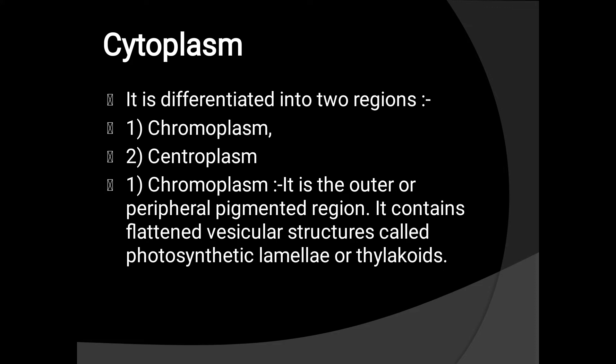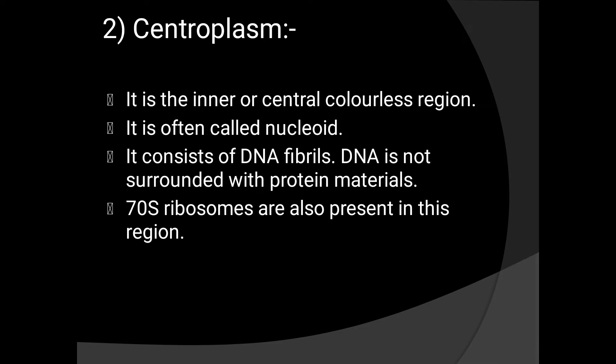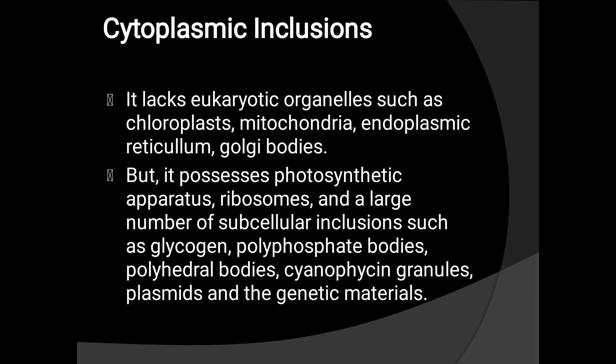Cytoplasm. It is differentiated into two regions: chromoplasm and centroplasm. Chromoplasm is the outer peripheral pigmented region. It contains a latent vesicular structure called photosynthetic lamella or thylakoids. Centroplasm is the inner or central colorless region, also called the nucleoid. It contains DNA fibrils. In centroplasm, the DNA is not surrounded by protein materials. 70S ribosomes are also present in this region.